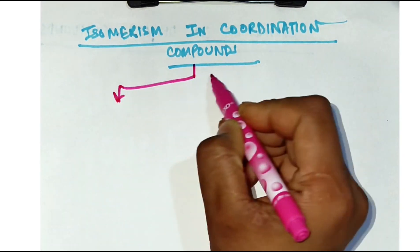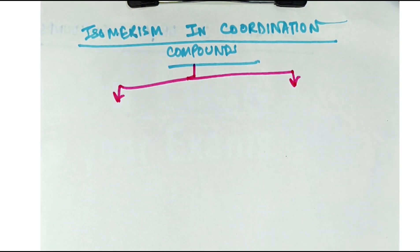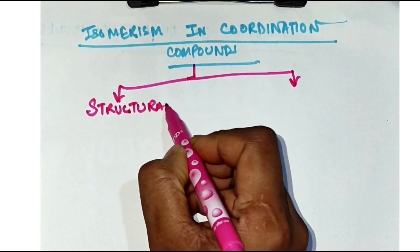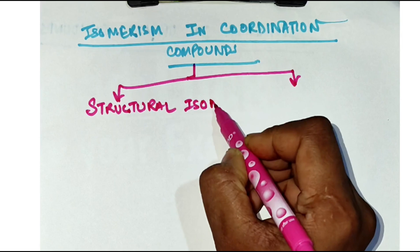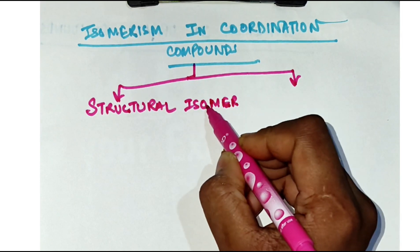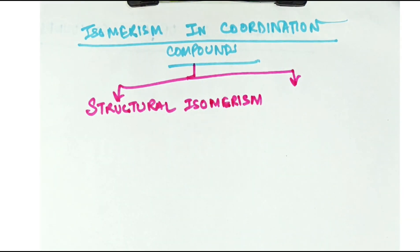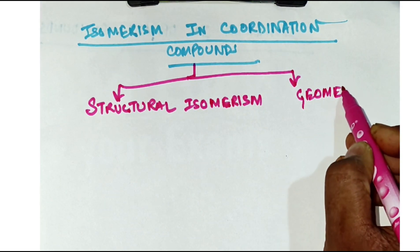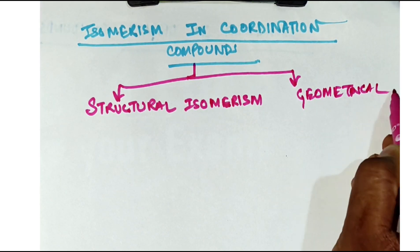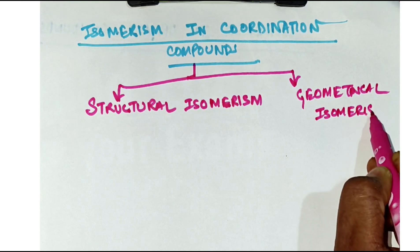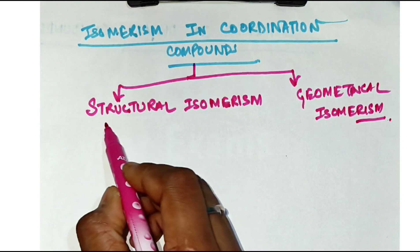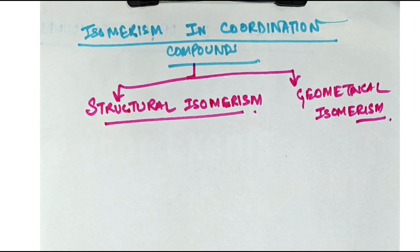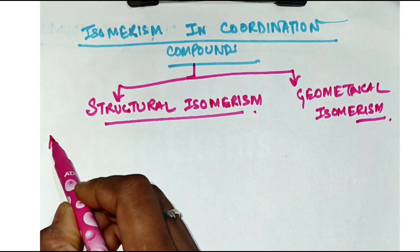Coordination compounds have two types of isomerism. First is structural isomerism, which is somewhat similar to what we have in organic chemistry. The other one is geometrical isomerism. Within structural isomerism there are many subtypes, and in geometrical isomerism also there are many types, so we'll discuss each one in detail.